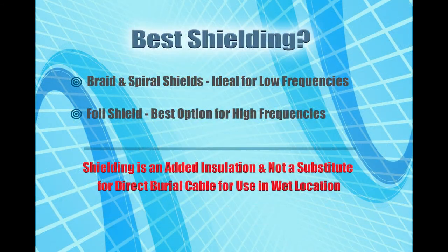The ideal shielding for any application depends on the specific application for which it is going to be used. Resistance influences shielding efficiency, thus making wire-based shields such as spirals and braid shielding ideal for lower frequency applications. Coverage is the primary issue at higher frequencies, making foil shields with 100% coverage the best option. Although shielding makes a cable more rigid and robust, it does not mean it is suitable for wet locations or direct burial unless specifically manufactured for those applications.